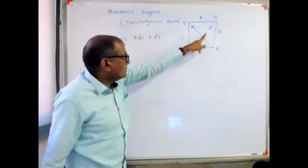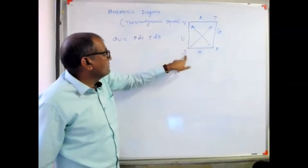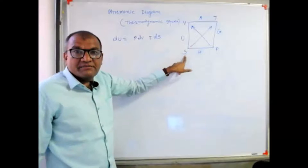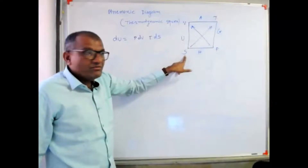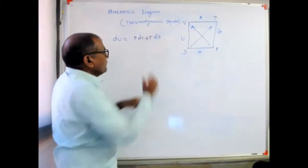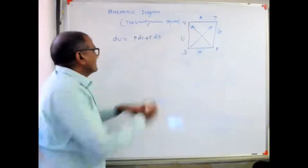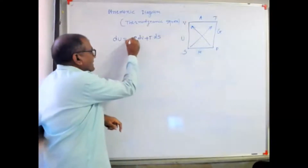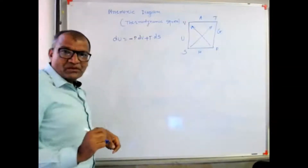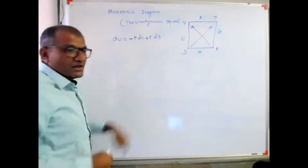Regarding the sign: if the arrow is pointing away from the variable, then the sign will be positive. If the arrow is pointing towards the variable, then the sign will be negative. This gives us the first equation.